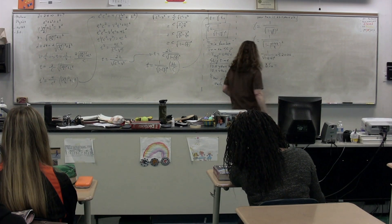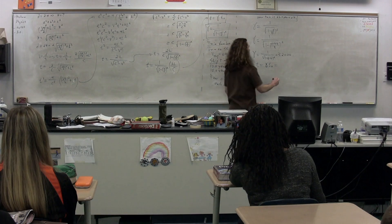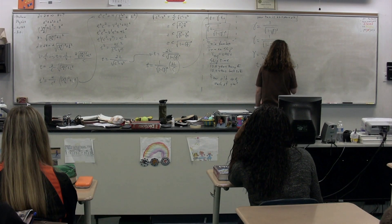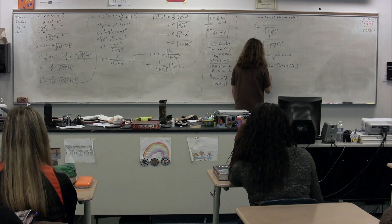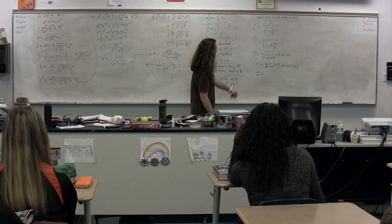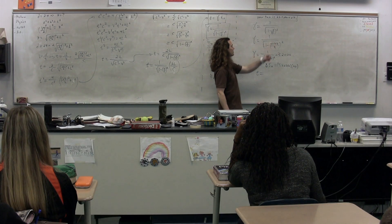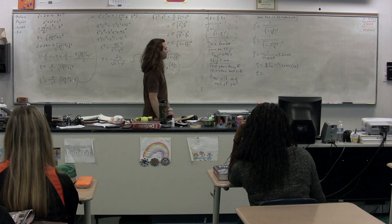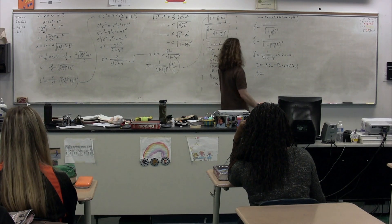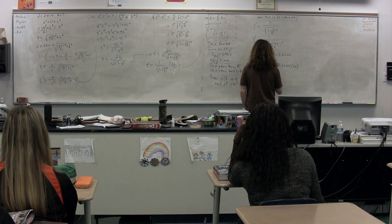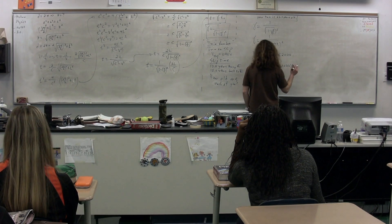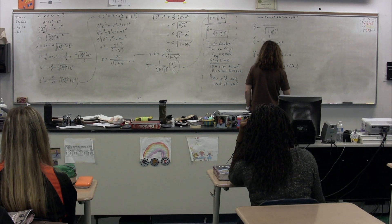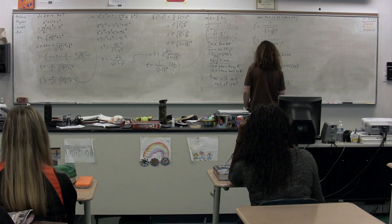So the time for you, the twin, is going to be the gamma, 3.20256, multiplied by the proper time, which is 20 years. Oh, by the way, notice that gamma is going to have no dimensions because velocity divided by velocity is going to be no dimensions. So time is 64.05126. Thank you. So 64 years old is your age.